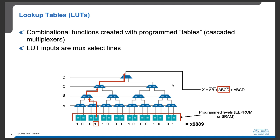Lookup tables can be used to implement combinational functions through cascaded multiplexers. We can think of the lookup table as a series of multiplexers, where the inputs to the lookup table are the multiplexer select lines. A, B, C, D are four inputs to this lookup table, and within it we have a number of multiplexers. Each multiplexer takes one input as its select line — for example, this multiplexer has A as the select line to choose one of two inputs.